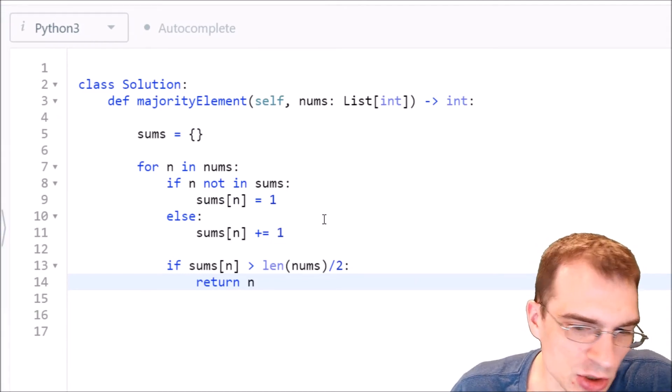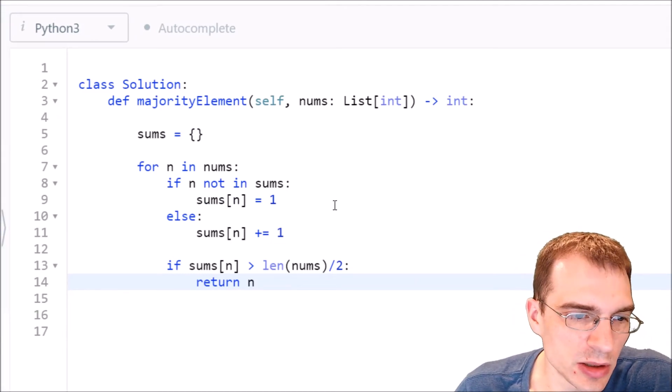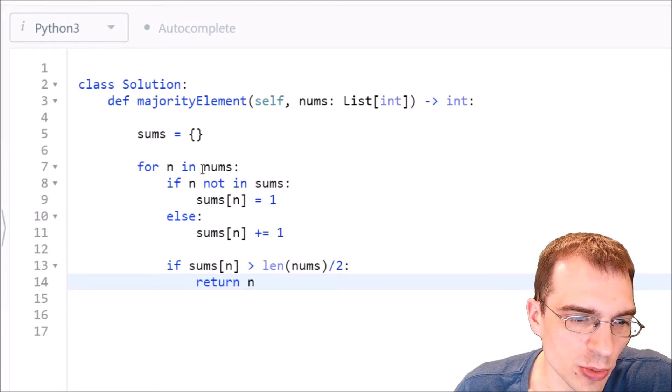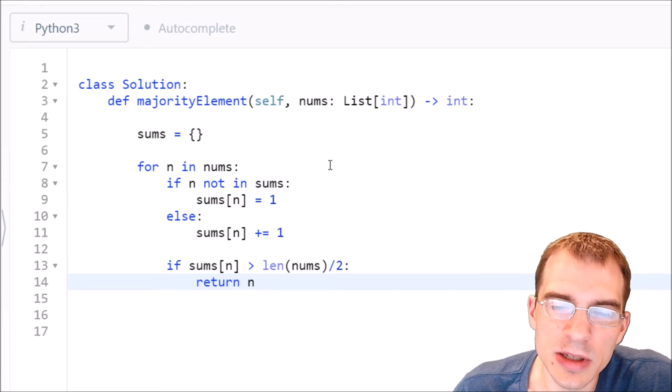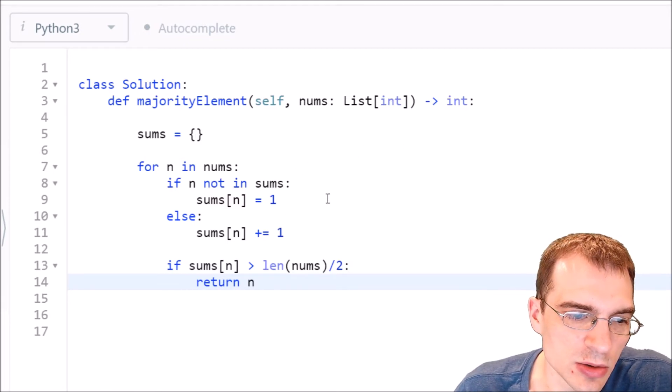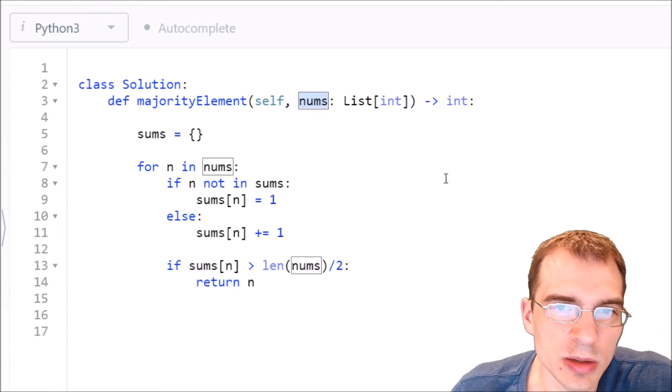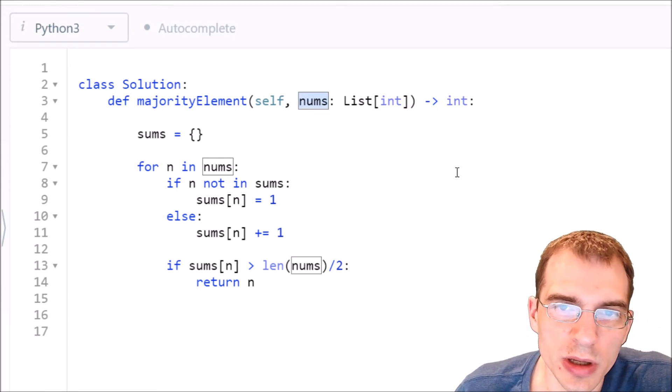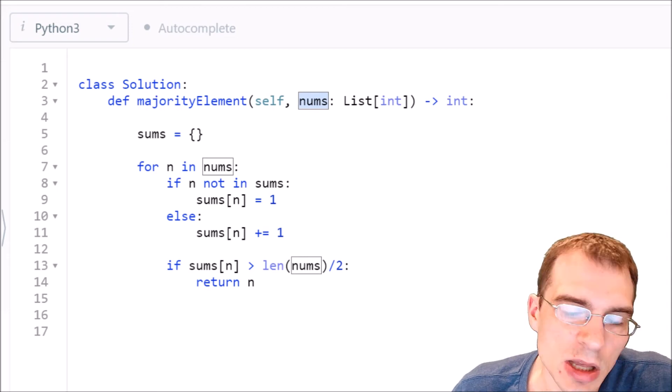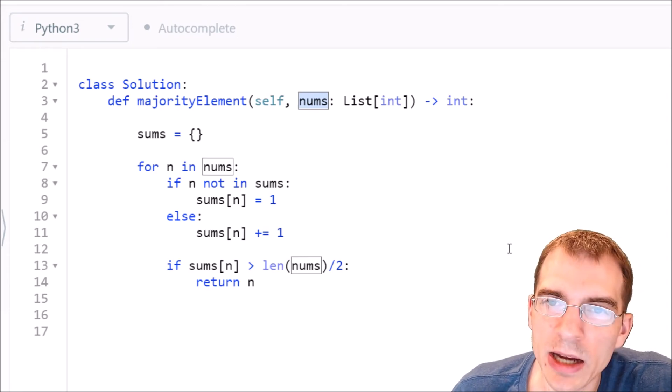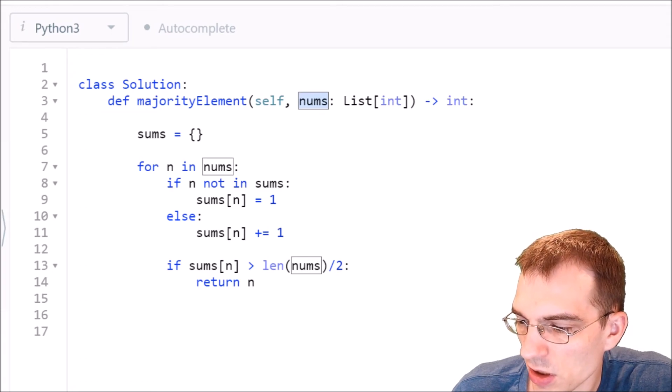And this shouldn't actually be too bad of a solution in theory because we only looped through the list once. So this is actually an O of n solution, a linear length solution. There are other solutions we could do that would be actually more than O of n, but might be simpler. So I'm actually going to go back to the whiteboard and show what one of those would be just because it's kind of interesting.